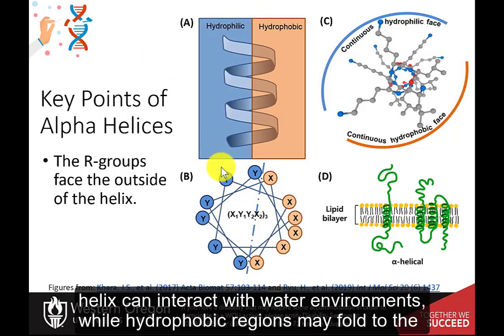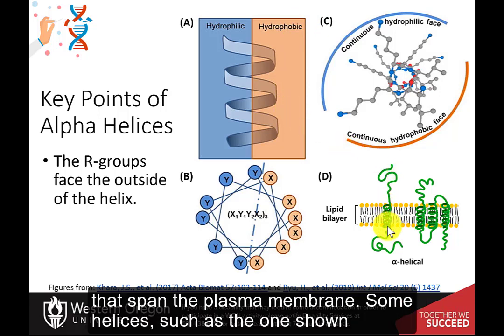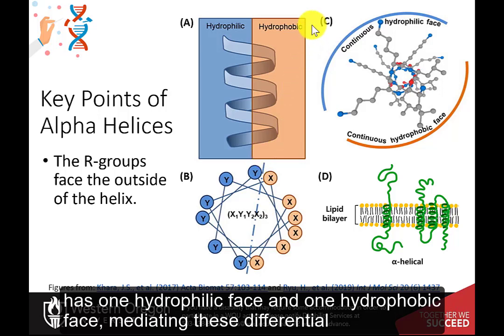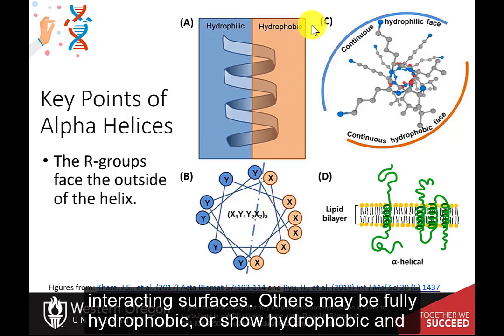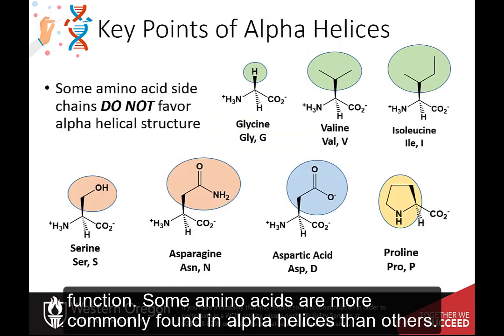Hydrophilic portions of the helix can interact with water environments, while hydrophobic regions may fold to the inside of the protein to be shielded away from the water, or may be found on alpha helices that span the plasma membrane. Some helices, such as the one shown, have one hydrophilic face and one hydrophobic face, mediating these differential interacting surfaces. Others may be fully hydrophobic or show hydrophobic and hydrophilic orientations in opposite directions, depending on their localization and function.